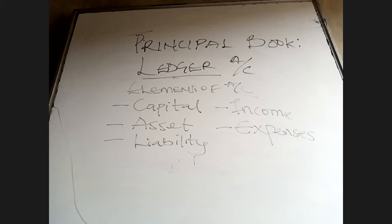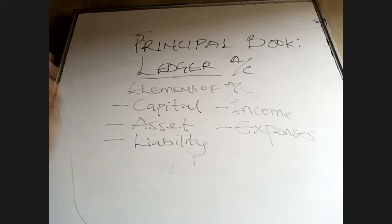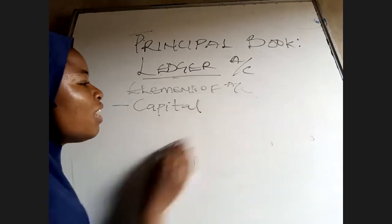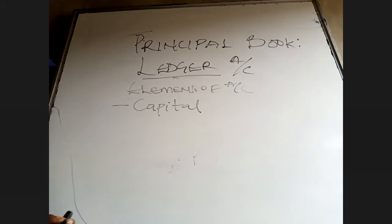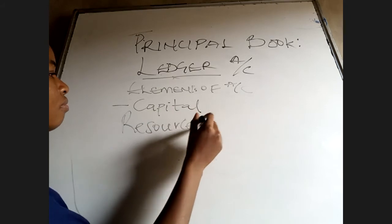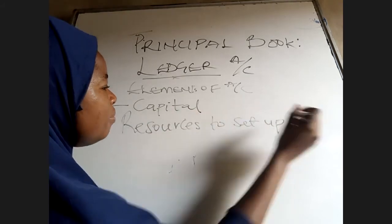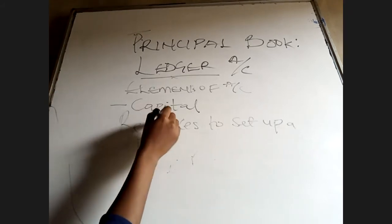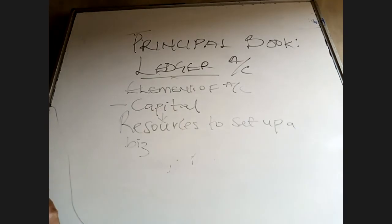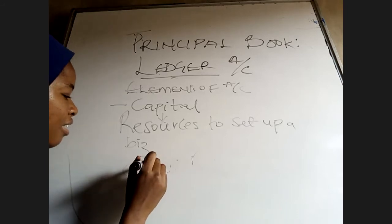I will use the elements of account to explain better the ledger account, so when you see them in any situation you will be fine. I want us to understand the concept behind debiting the receiver and crediting the giver. Capital is the resources you put together to start up a business - resources to set up a business.